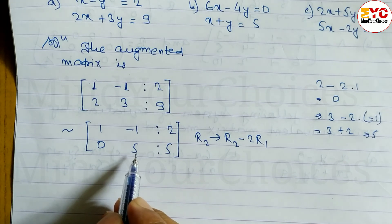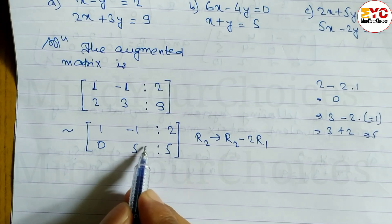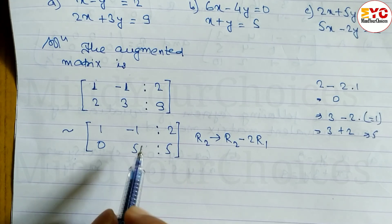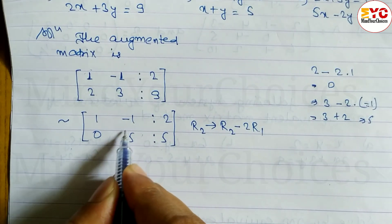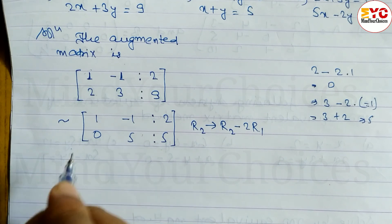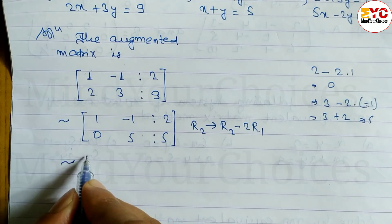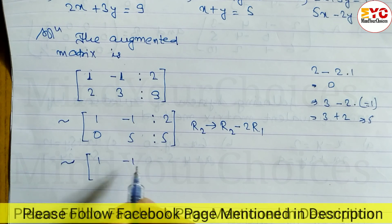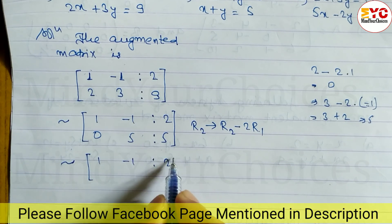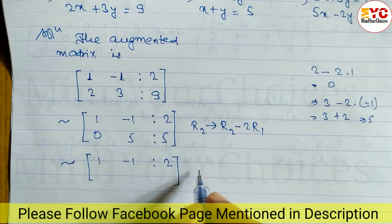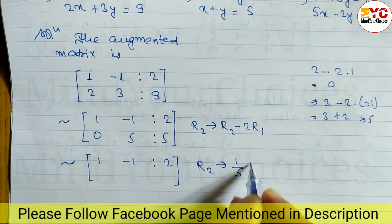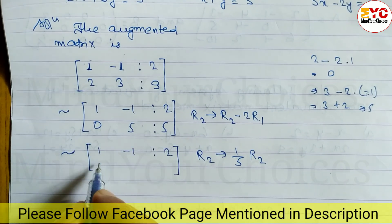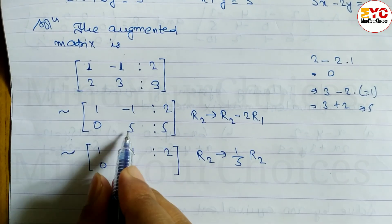After row operations, the second row element is 5. We have to divide by 5. The new R2 becomes R2 divided by 5. So: 0 divided by 5 is 0, and 5 divided by 5 is 1.